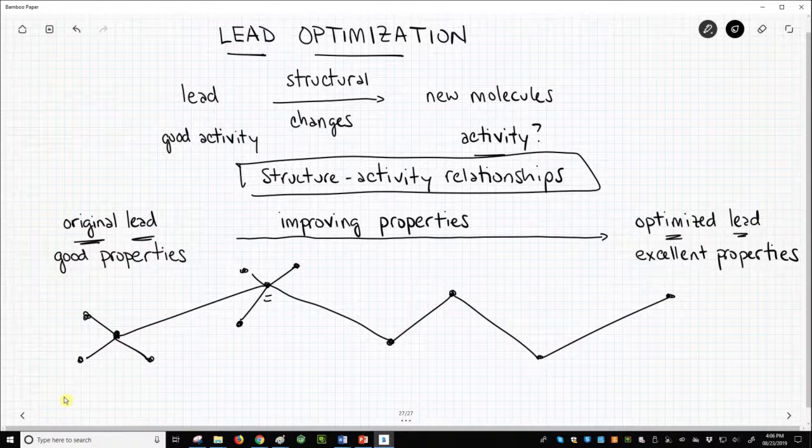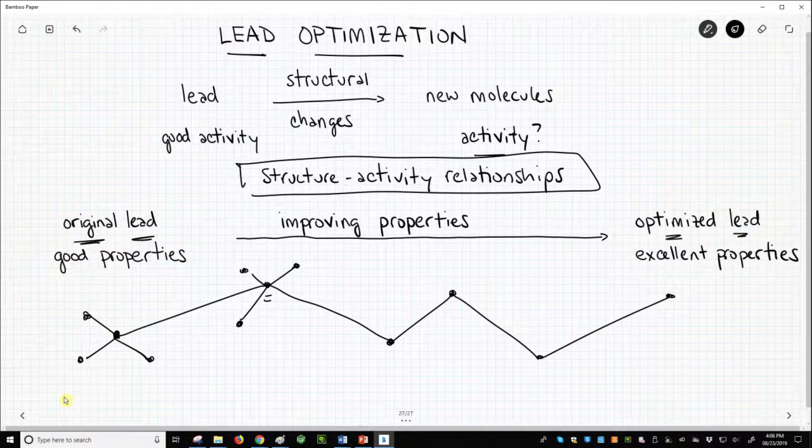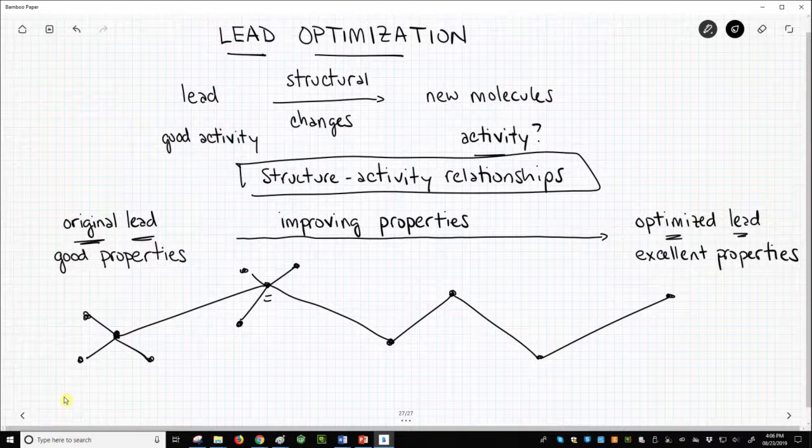This visualization is oversimplified. In practice, the optimization team must routinely weigh difficult decisions. A molecule may have much better potency but much worse ADME properties. Choosing the best molecule from a group is rarely straightforward.